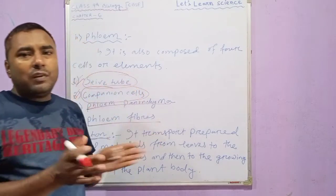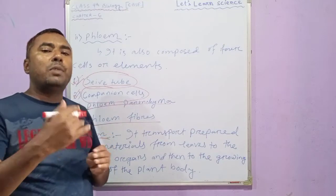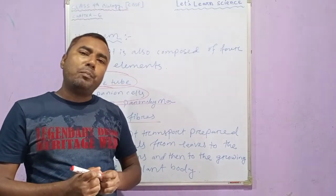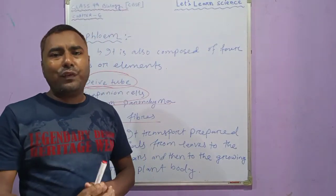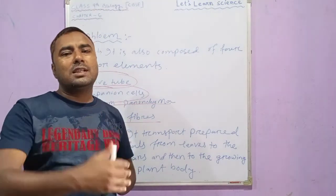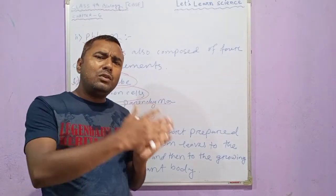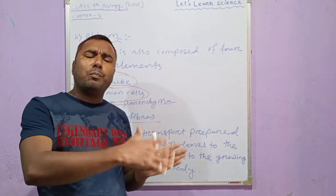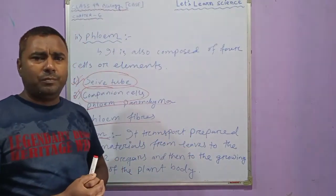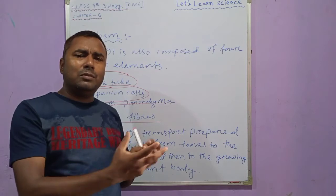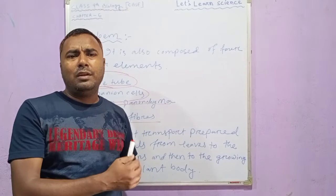Let us revise what we have learnt today in this session. We have learnt about complex permanent tissue — why it is called complex permanent tissue, because it is made up of different types of cells but all cells have the same or common origin. The main function of complex permanent tissue is to transport various types of material in the plant body. We learnt about two types: xylem and phloem.